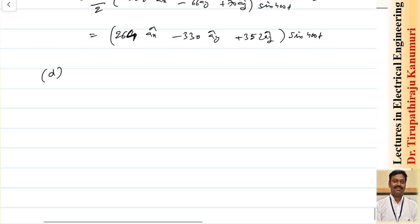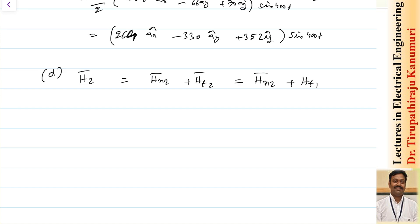Finally, for H2, we have H2 = Hn2 + Ht2. From the boundary condition, the tangential component is continuous, so Ht2 = Ht1. Substituting all values, H2 = (111.2 ax - 314 ay + 481.6 az) sin(400t).